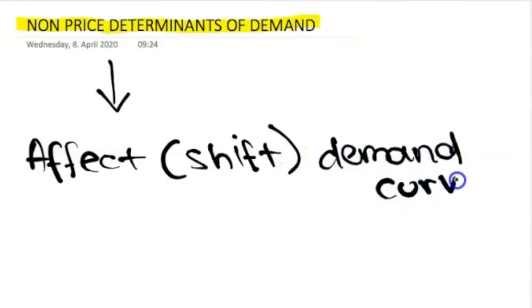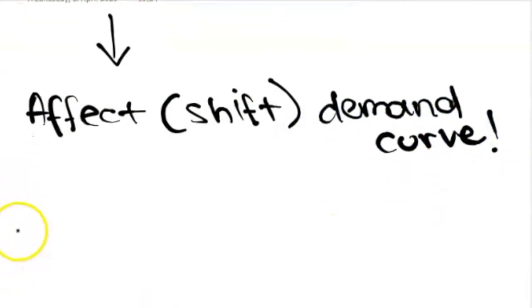Now, what are some of the non-price determinants of demand? Because obviously we know that price will affect quantity demanded. But what will affect demand? These determinants will shift the demand curve as a whole.